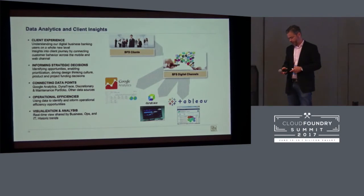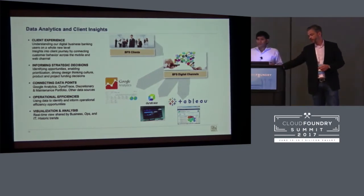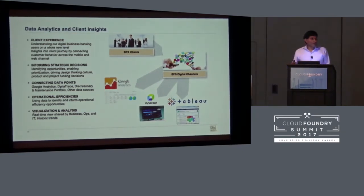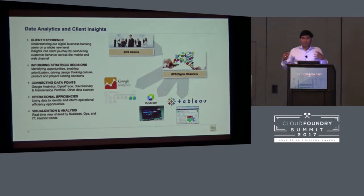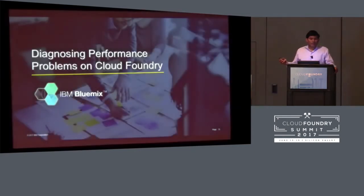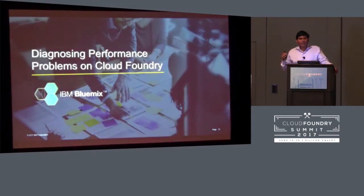So we've seen different ways of monitoring and what tools are available, including custom tools built from Grafana, Graphite, and InfluxDB. Now, if you want to diagnose a performance problem already present in your infrastructure or application, how do you go about it? I'm going to go over a specific incident that occurred while looking at an online banking application deployed on Bluemix Cloud Foundry at RBC.